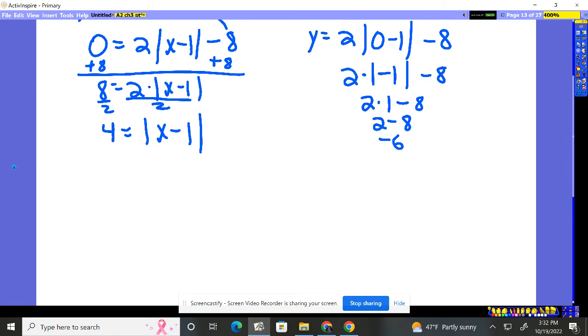This right in here has to come out to be a positive 4 or the answer has to come out to be a negative 4. So we set the x minus 1 equal to the positive piece and the negative piece.